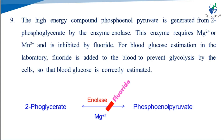Enolase requires magnesium or manganese and is inhibited by fluoride. In the laboratory, fluoride is added to blood samples for glucose estimation to prevent glycolysis by the cells, ensuring that blood glucose is correctly estimated.